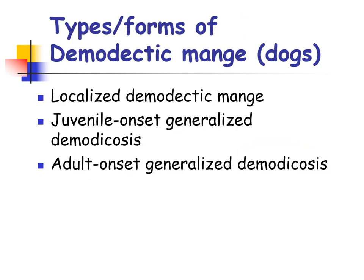There are three major forms of demodicosis seen in dogs: localized demodectic mange, juvenile onset generalized demodicosis, adult onset generalized demodicosis, and demodectic pododermatitis.